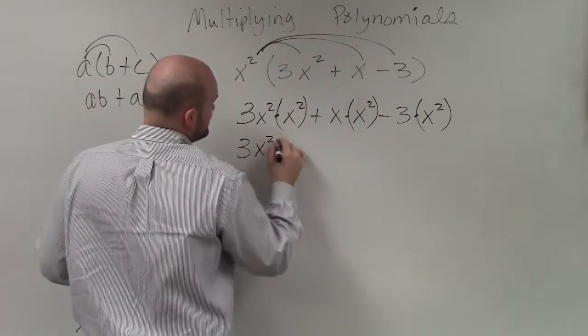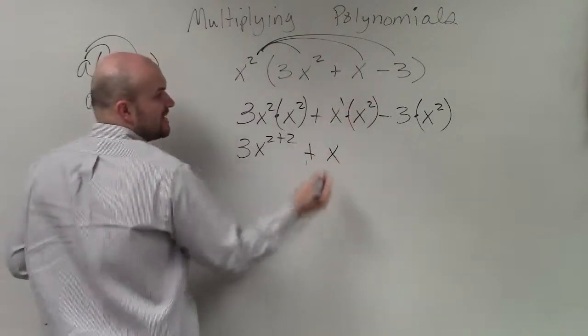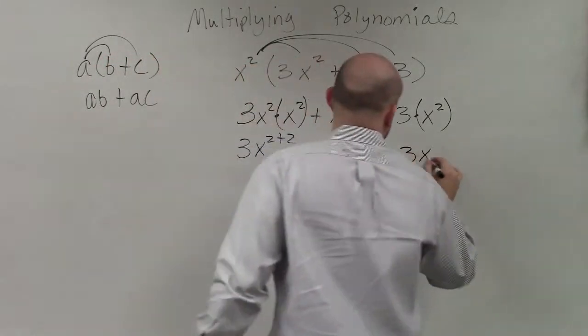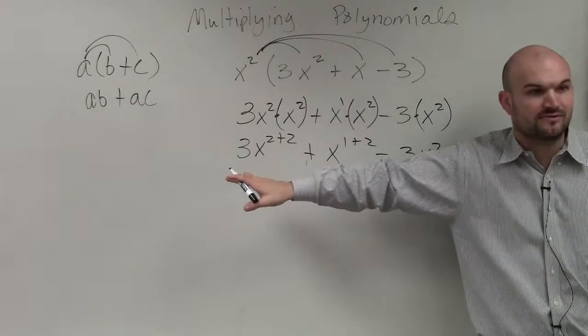I have 3x to the 2 plus 2, plus x to the—remember, this is x to the 1—1 plus 2, minus 3x squared. Does everybody see how I got to this step and what I did for this step?